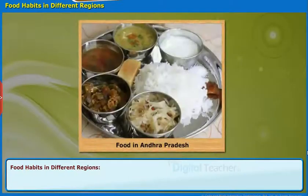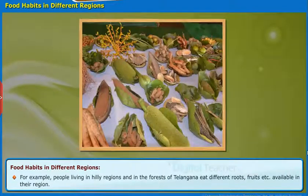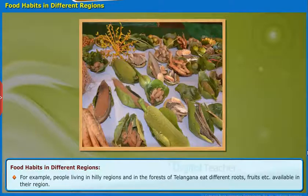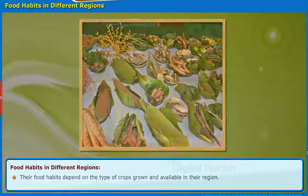Here, let us study the food habits of different people living in different parts of the country. Generally, people living in different regions will have different food habits. For example, people living in hilly regions and in the forests of Telangana eat different roots, fruits, etc. available in their region. Their food habits depend on the type of crops grown and available in their region.